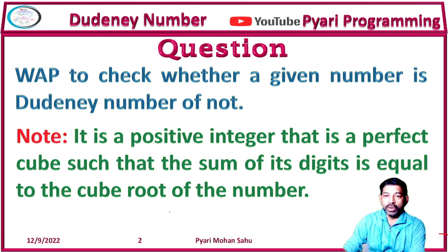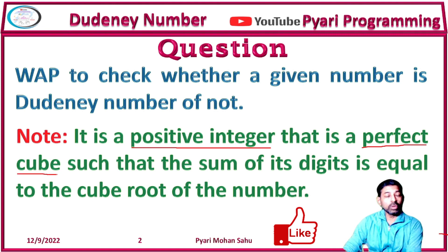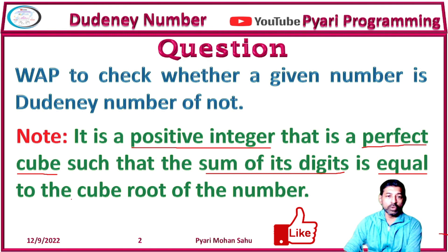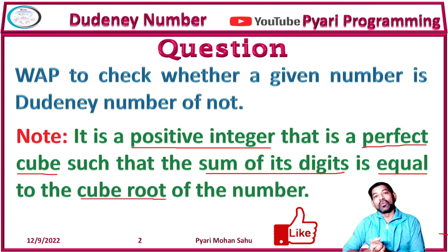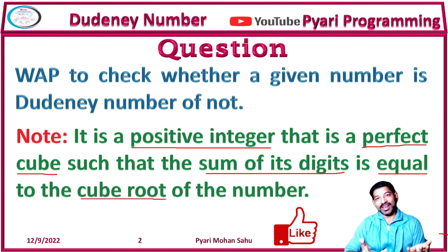We have to check these points: first, whether it is a positive integer; then, whether it is a perfect cube. If both are true, we go for the sum of its digits. It then says that the sum of the digits must equal the cube root of the number. So we calculate the sum of the digits, calculate the cube root of the number, and if both are equal, then it is a Dudani number.